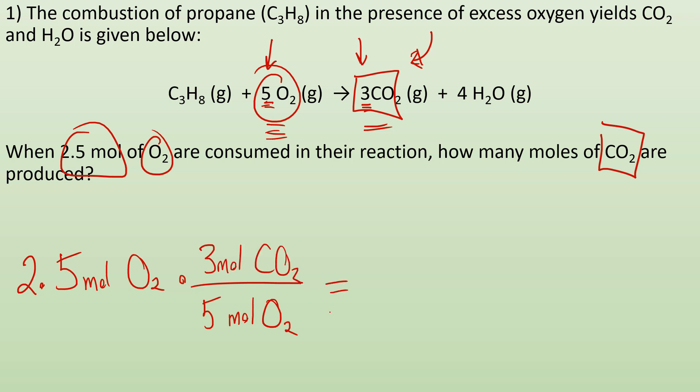So now I just plug and chug. 2.5 times 3 divided by 5 gives me 1.5 moles of CO2. And if you take a look, the units cancel out. Moles of O2 cancels out moles of O2, and you're left with just moles of CO2. So that's it.